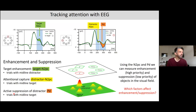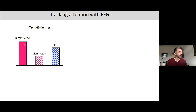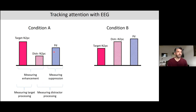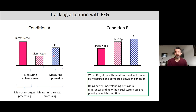In summary, we have two components: the N2PC and the PD. The N2PC can be elicited by targets or distractors and measures enhancement or attentional capture. The PD measures suppression. By comparing these components across conditions — looking at amplitude differences — we can track attention deployment in the visual field and explain behavioral differences between conditions.